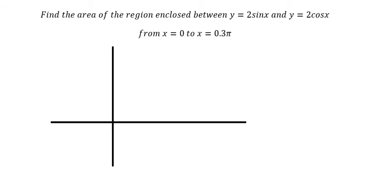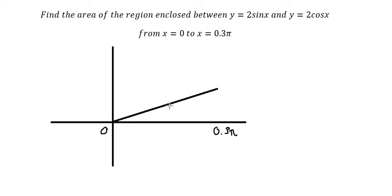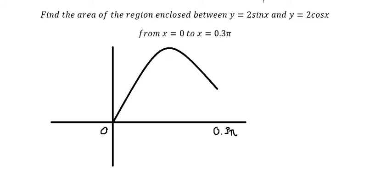Now I will show you the answer. We need to wrap the function in here and we will start from 0 to 0.3π. We know that two sine x should be like this, and two cosine x should be like this.